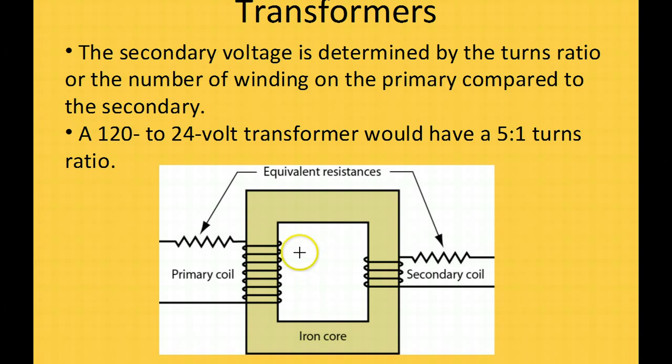If we have a transformer with a 10 to 1 turns ratio, it reduces the voltage by 10, making it a 12 volt transformer. A 2 to 1 turn would be a 60 volt transformer. In HVAC, we use the 5 to 1 turn on the primary and secondary coil in a 120 volt system. What would it be if we had a 240 volt primary coil to get down to 24 volts? We would need a 10 to 1 turn transformer.